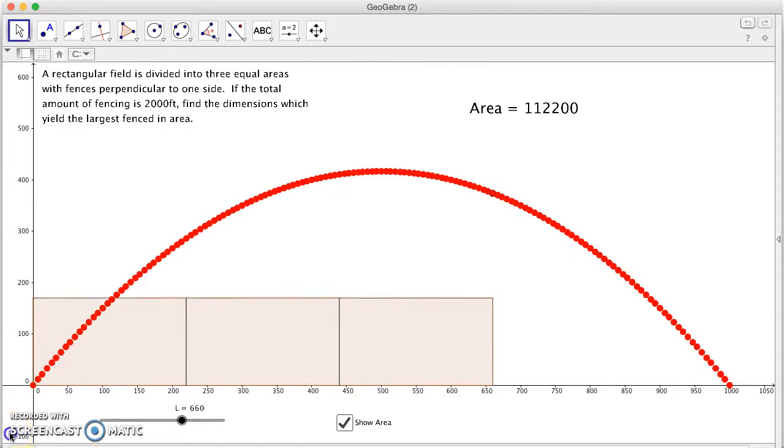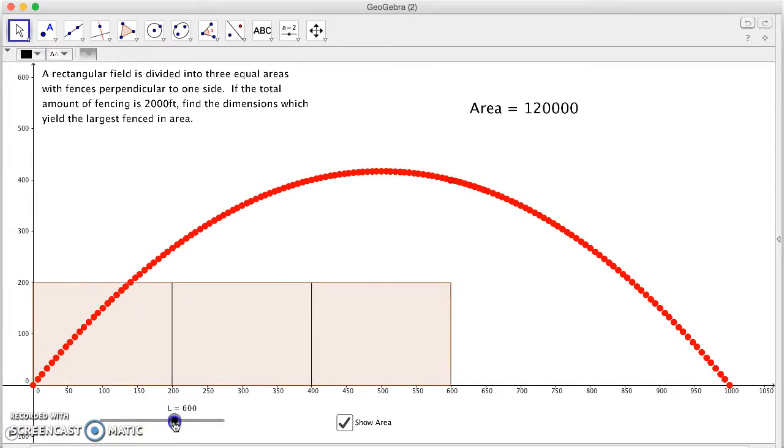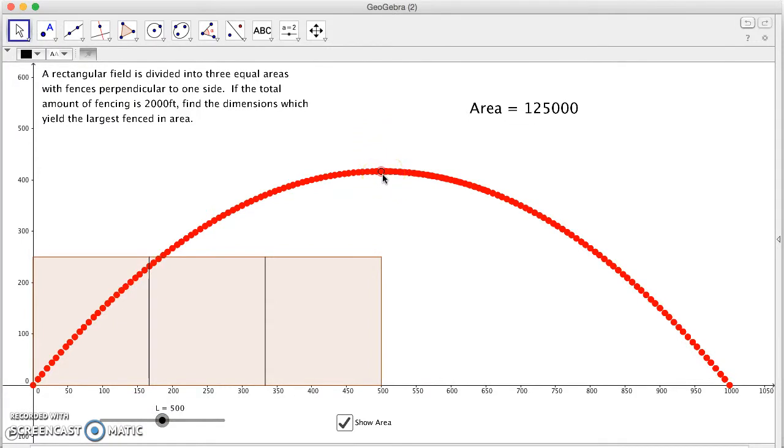We got a maximum value when the length was 500. We can go ahead and bring it right to there, 500. And you can see that little dot right there. That's the area of the function. Perfectly at a max, 125,000 square feet.